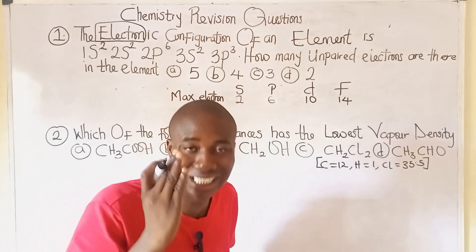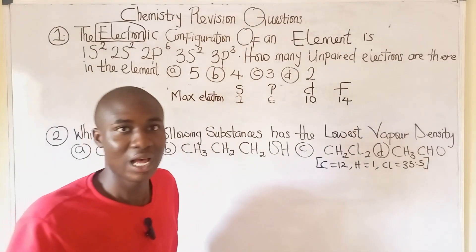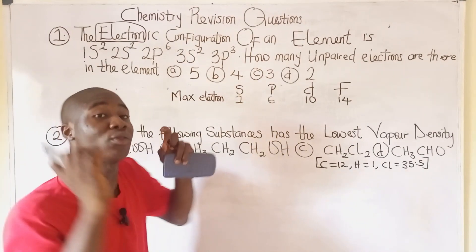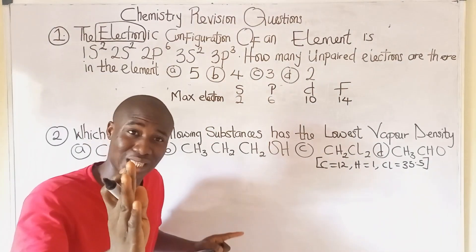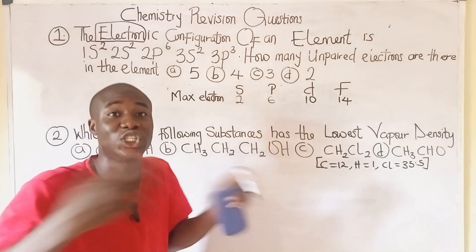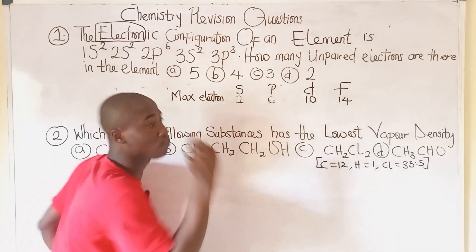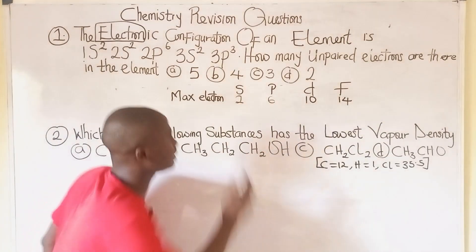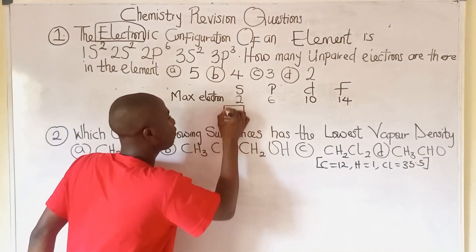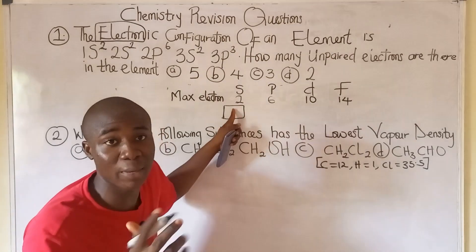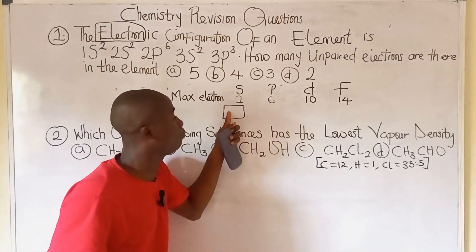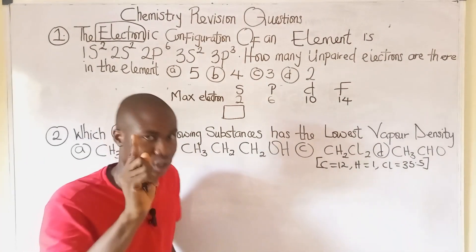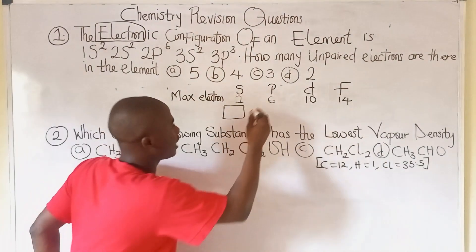All these orbitals have their respective number of boxes — also called degenerates. For the s orbital, the number of boxes is just one. So anytime we talk about the s orbital we draw one box, and this one box holds a maximum of 2 electrons. This is going to help us solve this question.